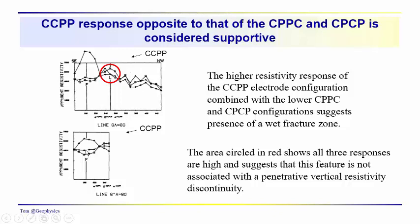Here's another example. The area circled in red shows all three responses occurring together. Over here we could have about the same thing with a low resistivity — probably not a fracture zone, and may not be a good place to put a water well. But the circled area could be a good place to put a water well.